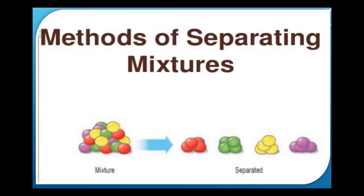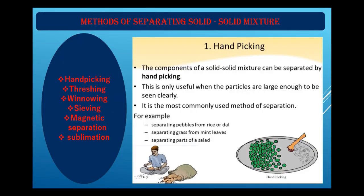Good morning students. In my previous video I explained about compounds, elements, and mixtures, and why there is a need for separating mixtures. Today I am going to explain the methods of separating mixtures. Different components of mixtures have different chemical and physical properties. Since components in a mixture are not chemically combined, they possess their own properties. Selecting the appropriate method of separation depends on the characteristics of each component.